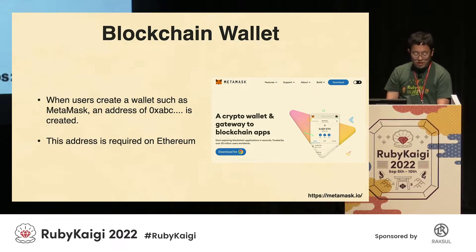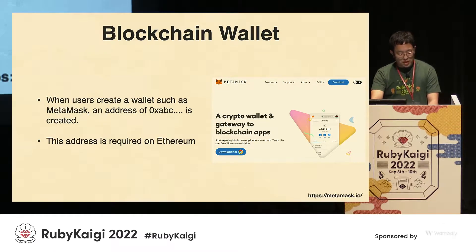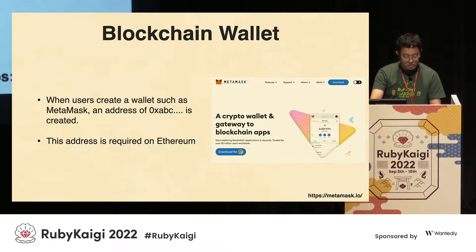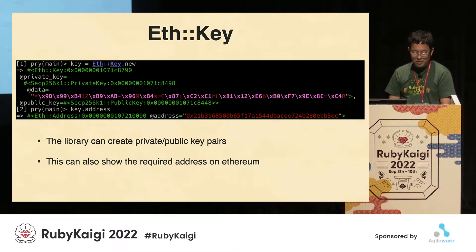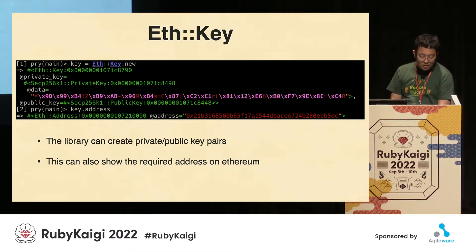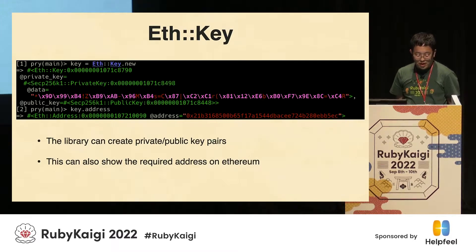Let's talk about addresses on Ethereum. One thing we are all familiar with is a blockchain wallet. For example, MetaMask. It is needed to send and receive ETH on the Ethereum blockchain. You can easily create an address in eth.rb. A public key and private key are created, and from them an address is created. This will be unique and different from others.